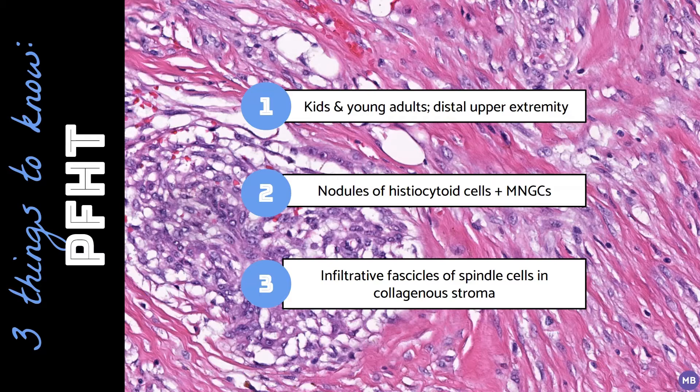To me, this is a pretty unique morphology. However, if you have a small biopsy lacking both components, it may not be as clear. In such cases, the differential would include fibroblastic and myofibroblastic tumors, such as fibromatosis, nodular fasciitis, and fibrous hamartoma of infancy.